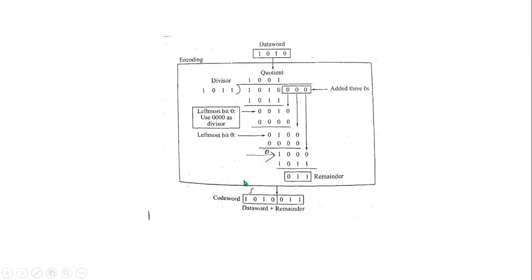If you want to generate the code word, you use the divisor and the data words. This is a simple problem. There is also the decoder method. The decoder uses the remainder — if the remainder is 0, 1, 1, we join it into a box. Just read the CRC problem carefully.